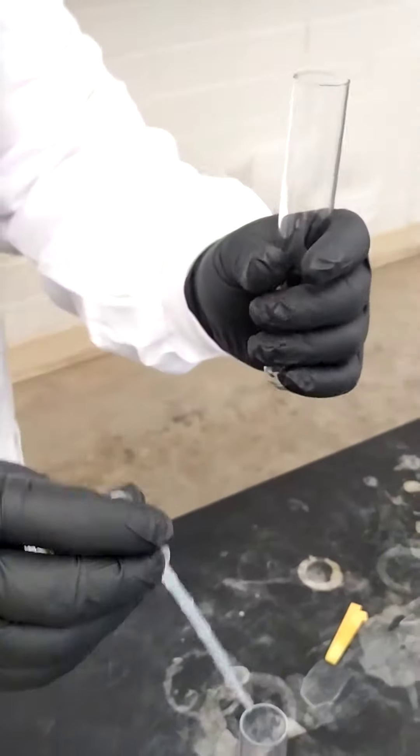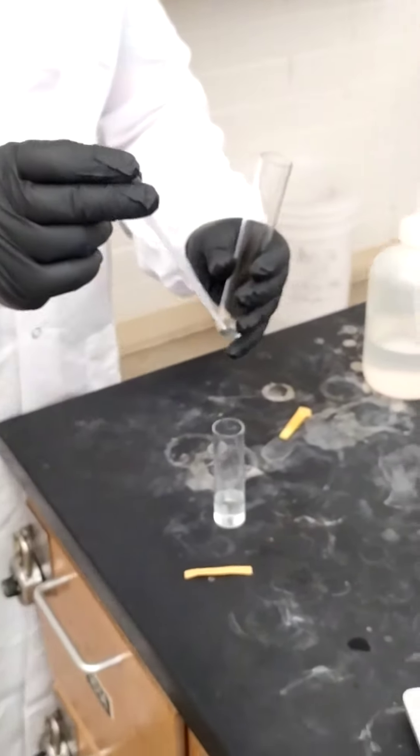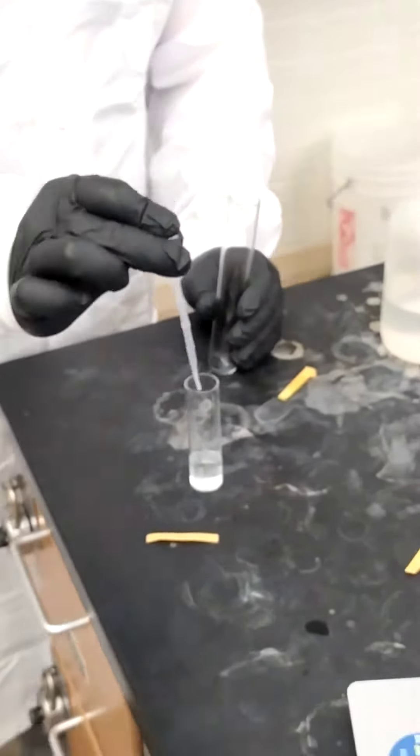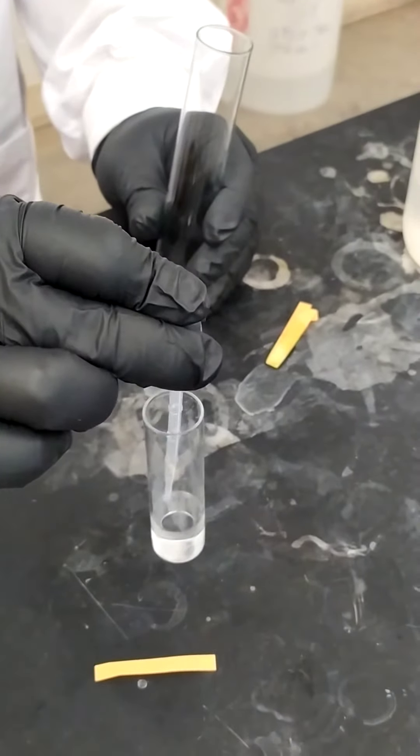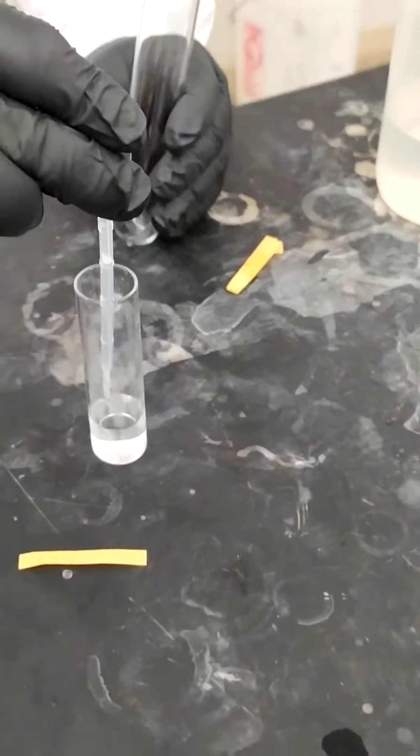So we're going to do one milliliter of this solution into this test tube. When we're doing this, we're going to squeeze the bulb here and insert it into the solution. You're going to slowly let it rise up until the line that you want.